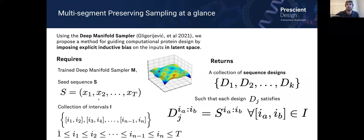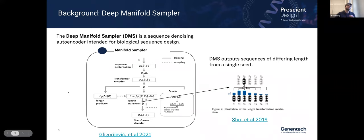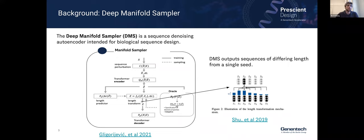Before I describe how multi-segment preserving sampling works, I'd like to provide some background on the deep manifold sampler. The deep manifold sampler is a transformer-based autoencoder trained on some collection of protein sequences, intended for biological sequence design. In the classic denoising autoencoder setup, we take an unperturbed sequence X and sample a new sequence X-tilde by using a discrete corruption process — something like deleting a few residues, inserting some residues elsewhere, or swapping out residues in another place — obtaining X-tilde and a change in the length of the sequence.